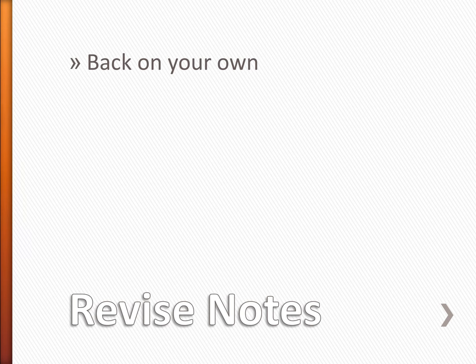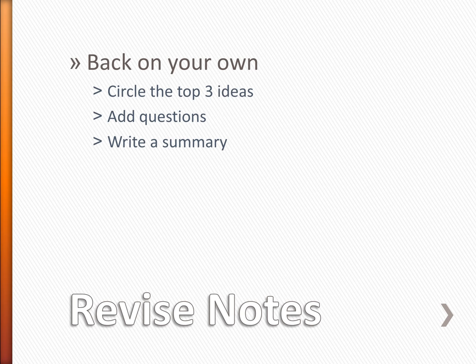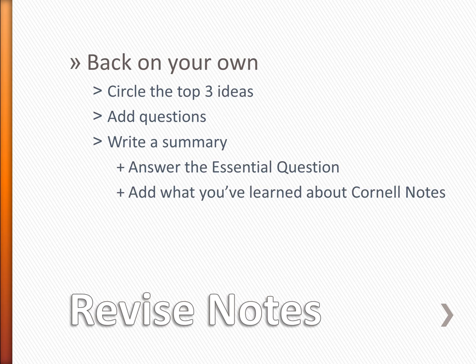If you've restarted the video, go back to your own table. Go once more through the notes and circle what you think are the three most important ideas. Then, to the left of where you took the notes, add questions that those important ideas answer. Take some time to add those questions. Then finally, write a summary that answers the essential question and shares what you've learned about Cornell notes and the Cornell note-taking process. Pause the video for about five minutes as students write their summary.